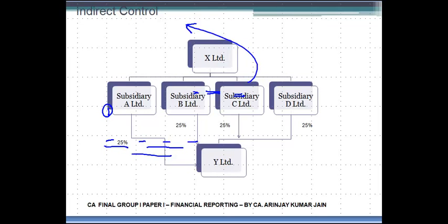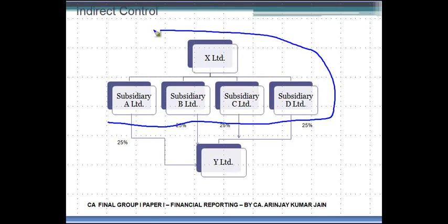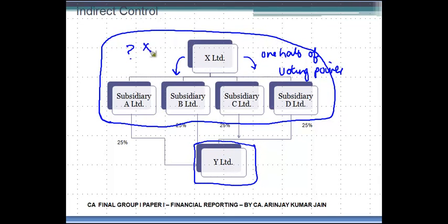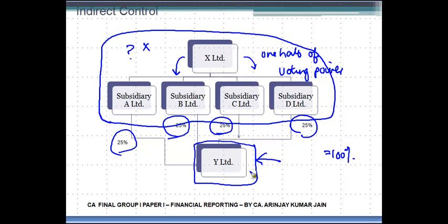This diagram shows that X Limited has subsidiaries A Limited, B Limited, C Limited, and D Limited, and in respect of each one of them it owns more than one half of the voting power. This is a case of direct ownership. But if you look at Y Limited, X Limited does not hold anything directly. However, its subsidiaries own 25%, 25%, 25%, and 25% — in other words, the entire 100% of Y Limited.